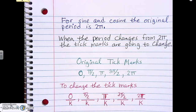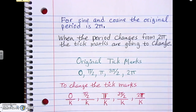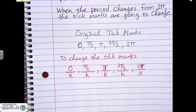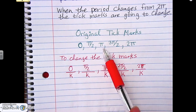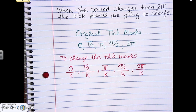We take every tick mark and divide it by k — kind of like the same thing we did with the period, where we divided 2π by k. So for each one of our original tick marks, we divide by k to figure out what the new tick mark is going to be, to match up with the period. That's why you have to memorize those original tick marks — you can't just copy the graph. You have to know them because you're going to divide them by k.